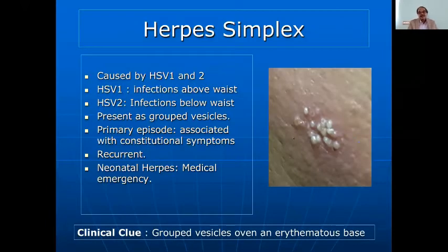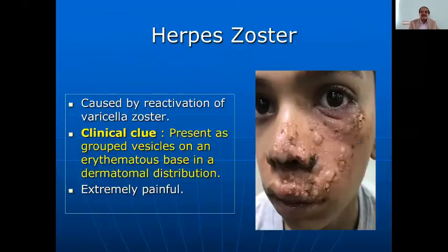Herpes simplex is another infection — the clinical clue is grouped vesicles over an erythematous base. Neonatal herpes is a medical emergency. It is caused by HSV-1 or HSV-2. The primary episode is associated with constitutional symptoms, but recurrent episodes are least symptomatic.